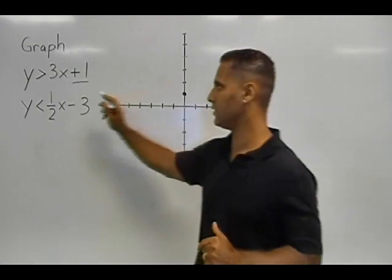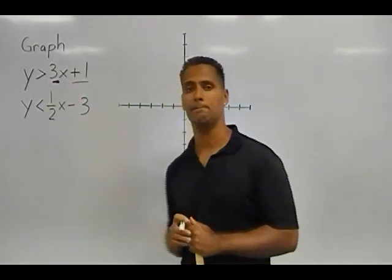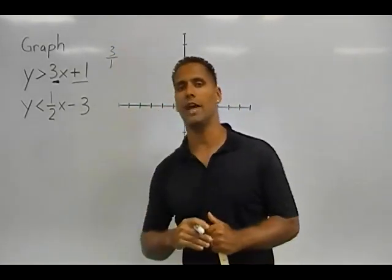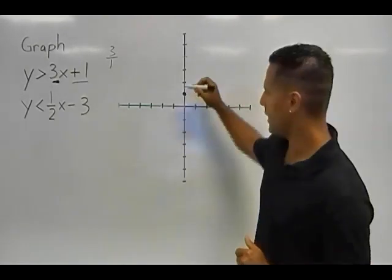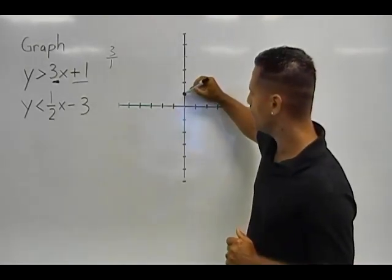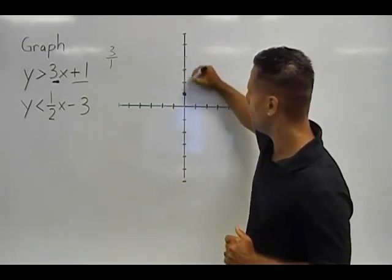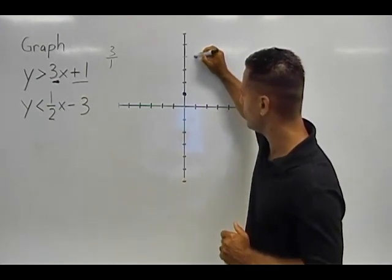The next thing we do is to look at the slope, and the slope of this inequality is 3. Now because it's a whole number we have to put 1 as a denominator so we can look at the slope as a ratio or the rise over the run. We would say that from this point the line is going to rise 1, 2, 3 units and it's going to go over 1. Once you have went up 3 and over 1, simply place a point at that location.